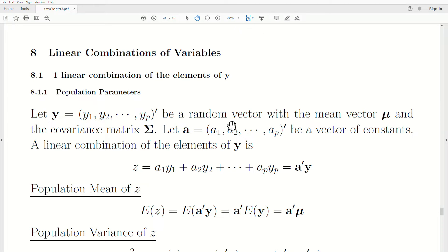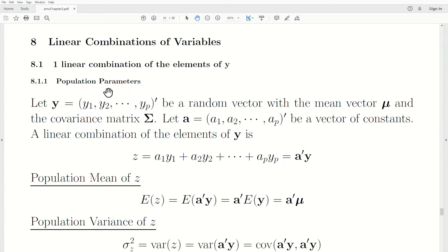First we're going to take one linear combination of the elements of Y. And then, of course, the next section will be K linear combinations of the elements of Y. So, let's do population parameters first.